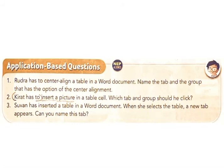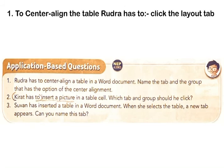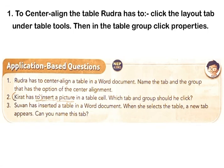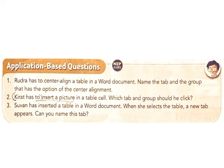Application-based questions. 1. Rudra has to center-align a table in a Word document. Name the tab and the group that has the option for center alignment. Answer: To center-align the table, Rudra has to click the Layout tab under Table Tools, then in the Table group click Properties.